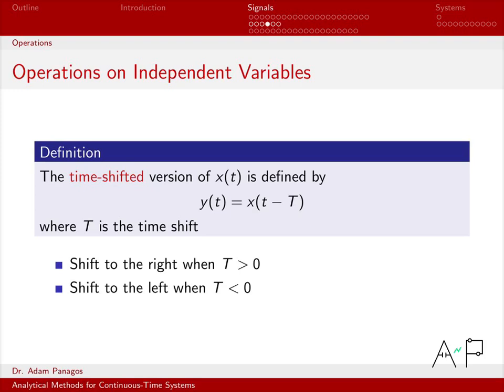So as an example, if capital T was 5, you would see t minus 5 here. And that would mean shift to the right by 5 units. And if capital T is negative, say if capital T was a negative 7, then you would have little t minus a negative 7. Negative, negative is positive. So you would see a little t plus 7 here. And that would be a shift to the left of 7 units.